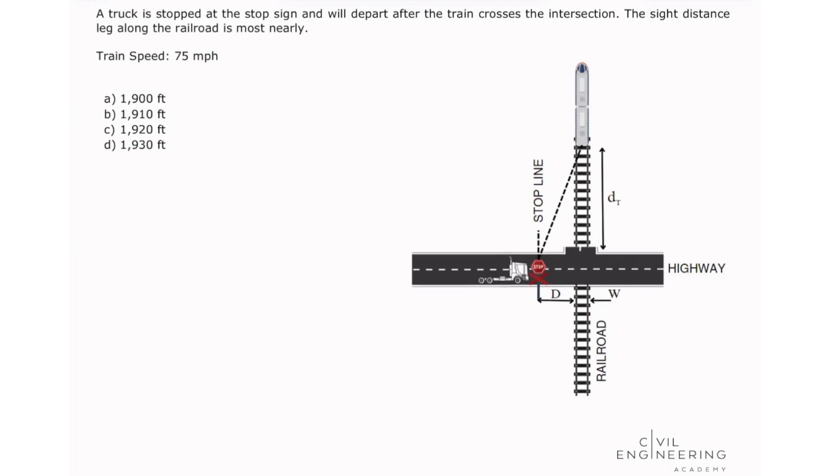Hello everyone, welcome back to Civil Engineering Academy. My name is Marina and today I'm going to be solving a problem for your PE transportation exam. The problem states like this: A truck is stopped at the stop sign and will depart after the train crosses the intersection. The side distance lag along the railroad is most nearly.